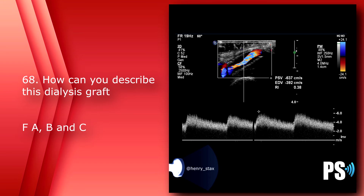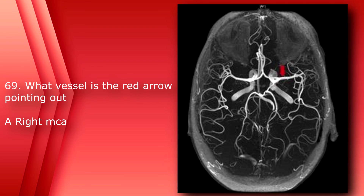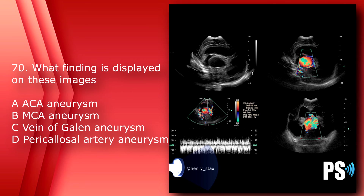Number 69: What vessel is the red arrow pointing to? A) right middle cerebral artery, B) left middle cerebral artery, C) right anterior cerebral artery, or D) left anterior cerebral artery. The answer is A, right middle cerebral artery.